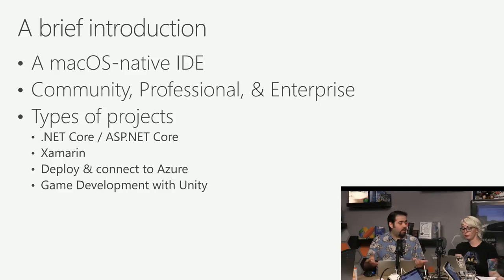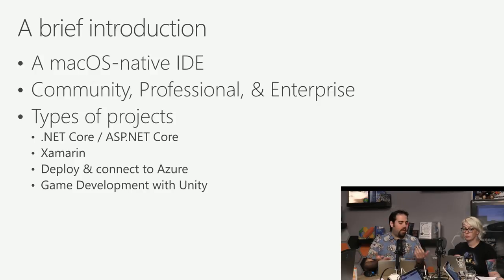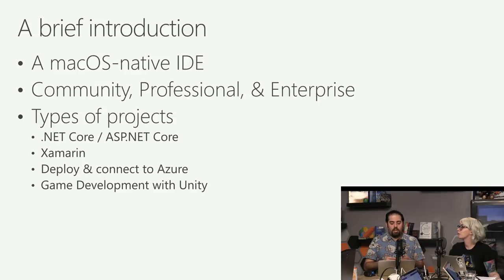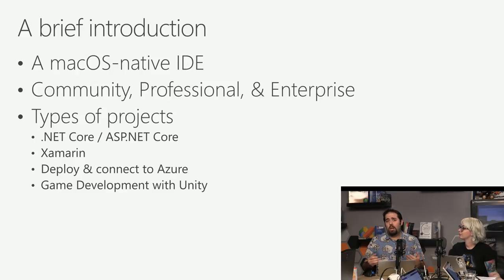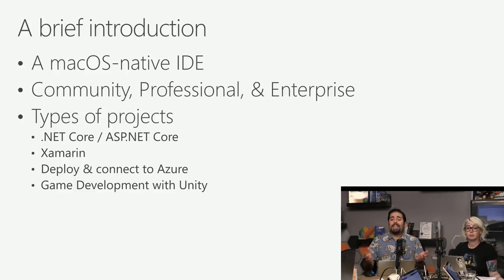We have a few different types of projects that we support in Visual Studio for Mac. From the File New Solution menu, you can access a variety of different project templates. You can create .NET Core apps, ASP.NET Core projects, do cross-platform mobile development with Xamarin, connect to Azure, work with Azure Functions. And something I'm pretty excited about — Visual Studio for Mac is now the home of Unity on the Mac, where you can develop Unity apps and games.